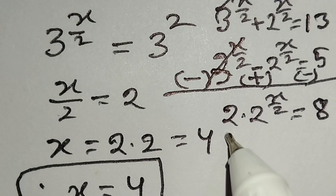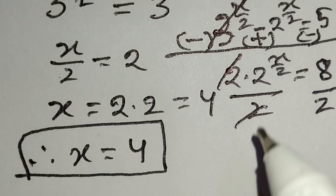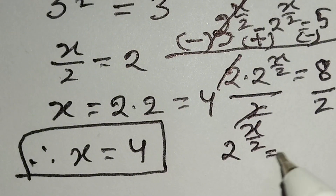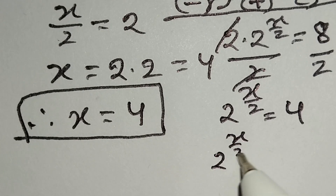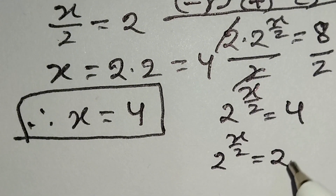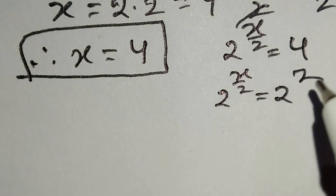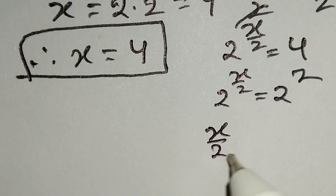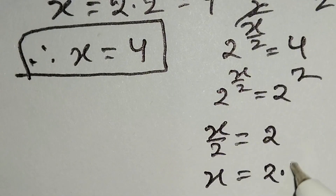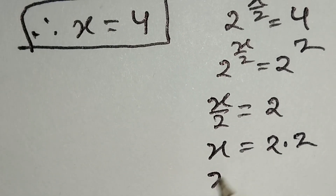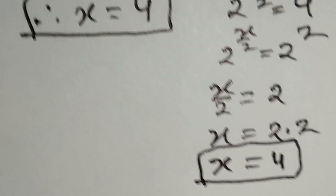Now we divide both sides by 2. So 2 to the power (x/2) is equal to 4. We can write 4 as 2 squared. Since both sides have the same base, x over 2 is equal to 2, so x is equal to 2 times 2, which equals 4. Therefore x is equal to 4.